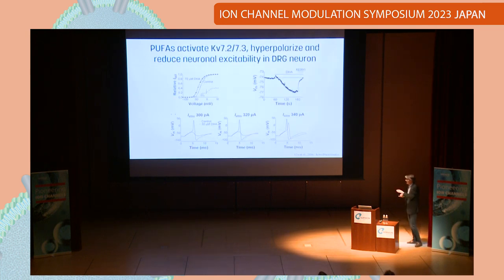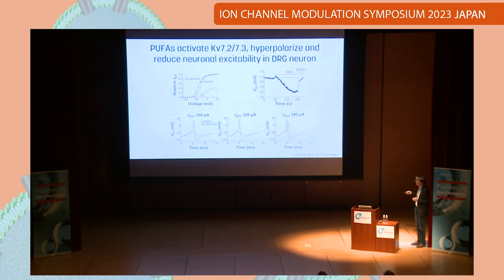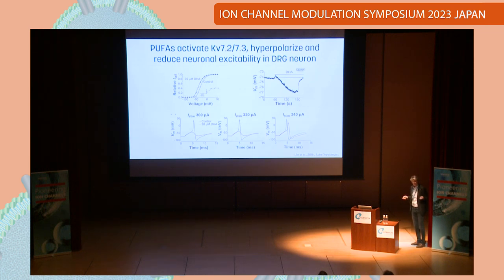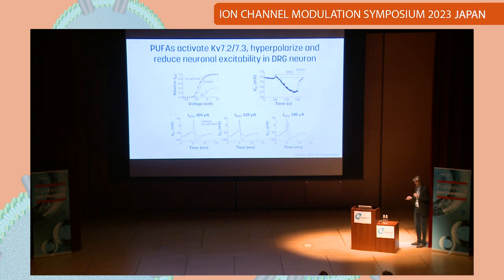We showed that these compounds activate the M channel by shifting the GV curve in the negative direction, hyperpolarizing the cell and changing the threshold to generate action potentials. We believe this super channel — the Shaker potassium channel from Drosophila melanogaster — can be a good tool to find M channel activators.